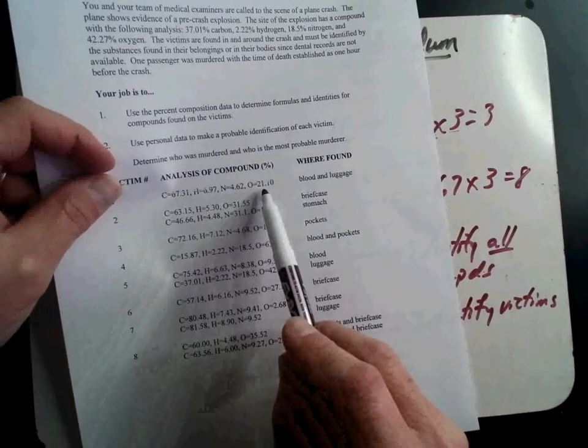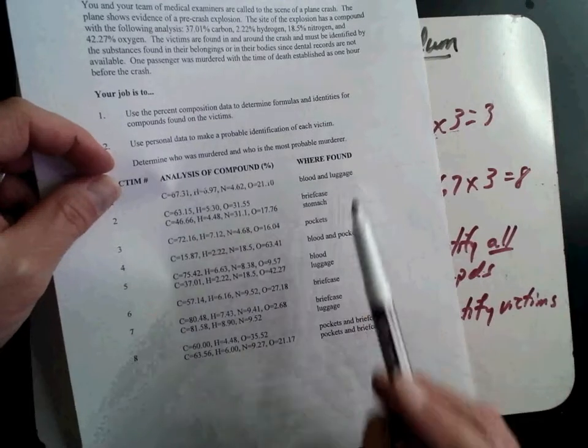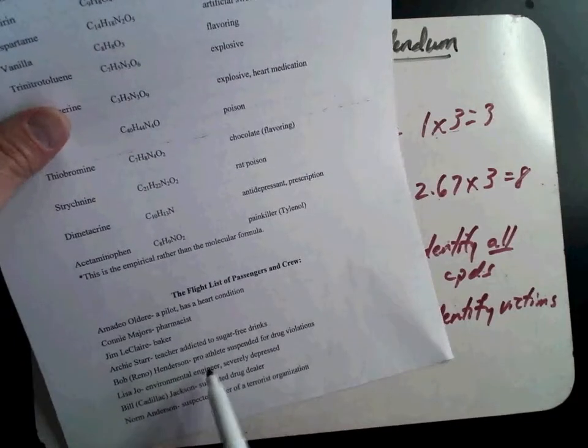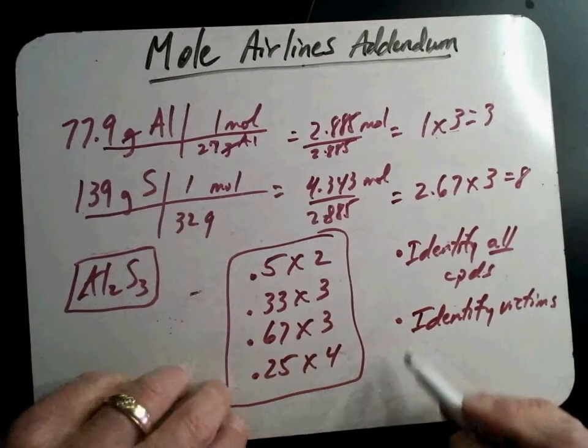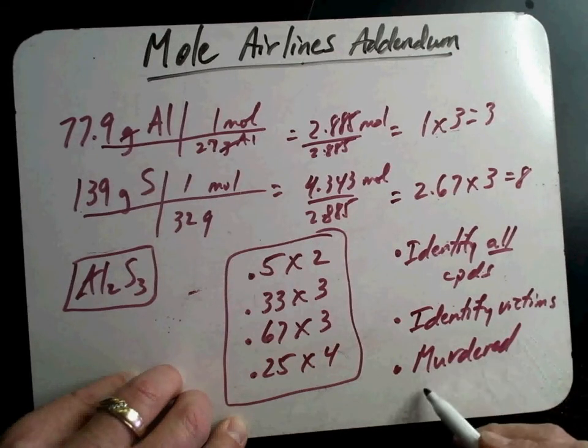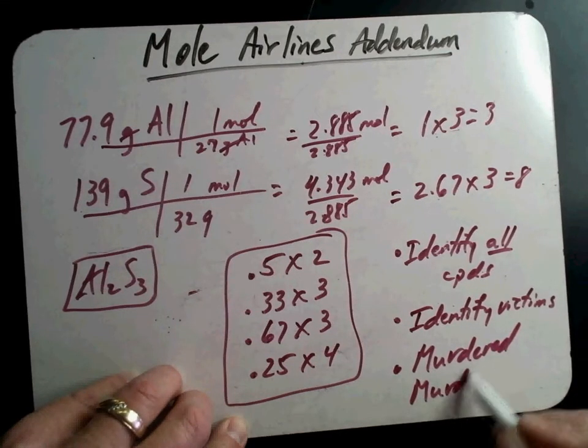In this first one, that unknown compound was in their blood and in their luggage. This one down here was in a briefcase. This was in their pockets. So that will give you a hint. So you're going to match the people to each of the victims, and then you have to figure out who was murdered in this murder mystery and who the murderer was.